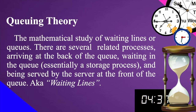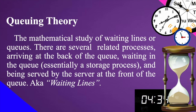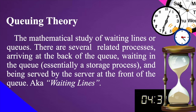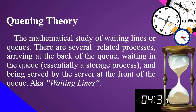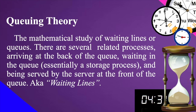Queuing theory is the mathematical study of waiting lines or queues. There are several related processes: arriving at the back of the queue, waiting in the queue — essentially a storage process — and being served by the server at the front of the queue, also known as the waiting line.